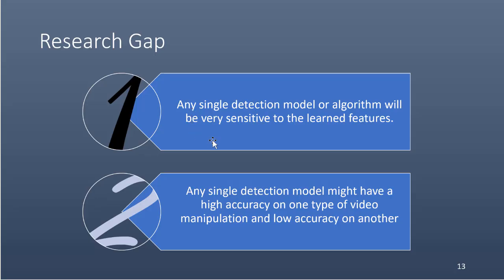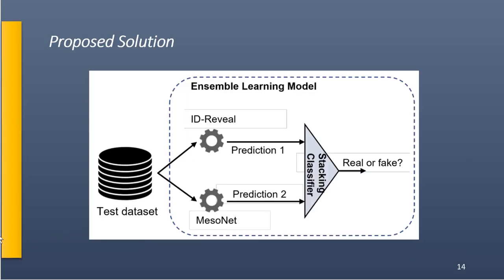Because of the wide variety of deep fake generation techniques and the huge generated datasets, a single model will not learn the wide variety of features. Any single detection model might have high accuracy on one type of video manipulation but low accuracy on another. Hence, we propose an ensemble learning model for deep fake detection by combining the best models from two different approaches — taking the best technique from each — and combining their outputs using a stacking classifier to detect whether a video is real or fake.